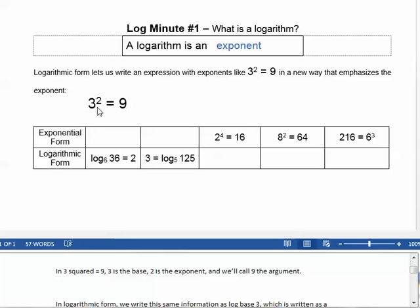In 3 squared equals 9, 3 is the base, 2 is the exponent, and we'll call 9 the argument.